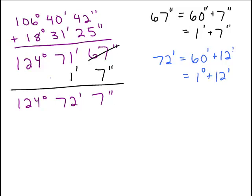So same reasoning, I'm going to put a plus sign here. I still have the 7 seconds, there's no problem here, but here I could rewrite this 72 minutes as 1 degree and 12 minutes.